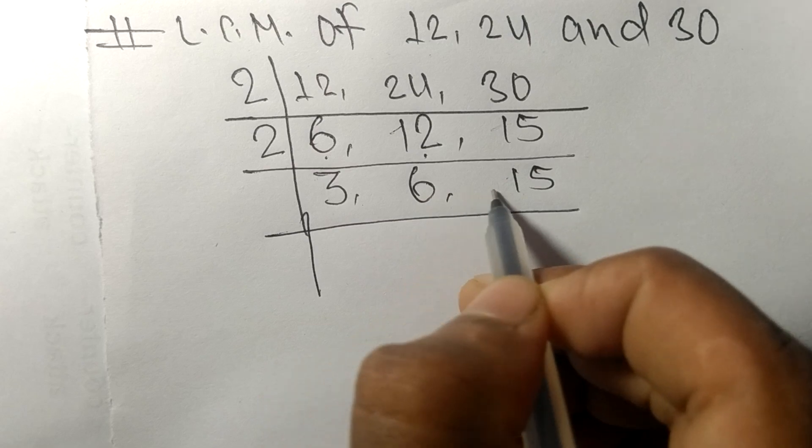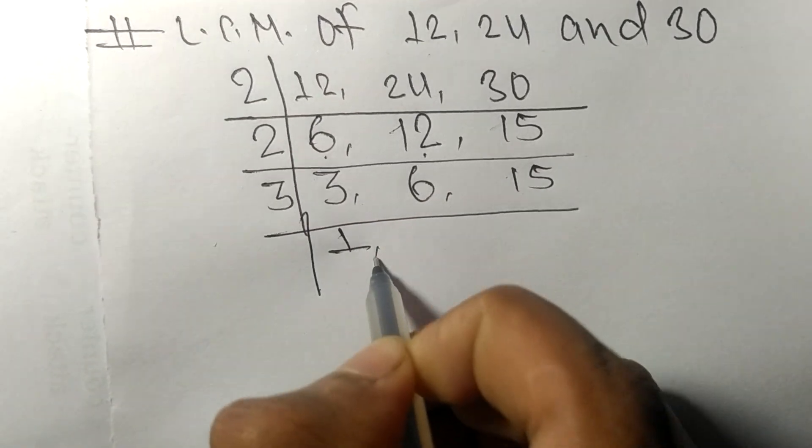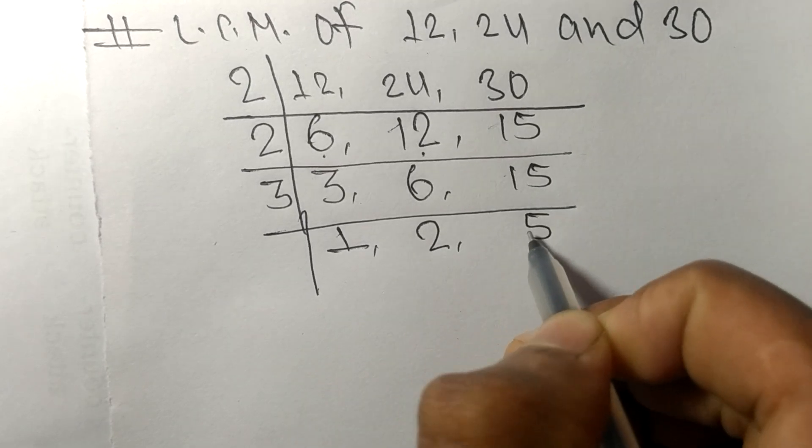Now all these numbers are divisible by 3. 3 times 1 means 3, 3 times 2 means 6, 3 times 5 means 15.